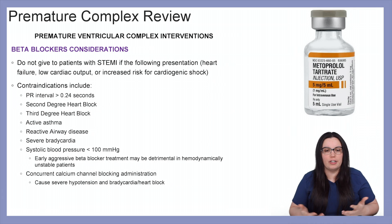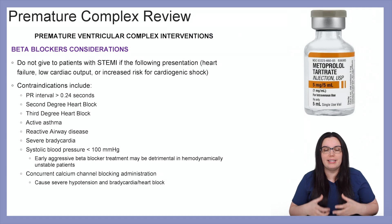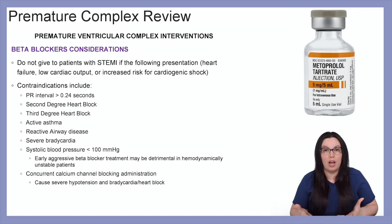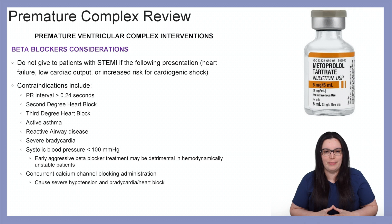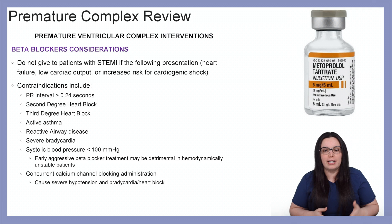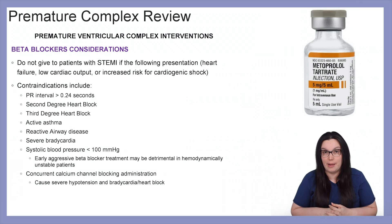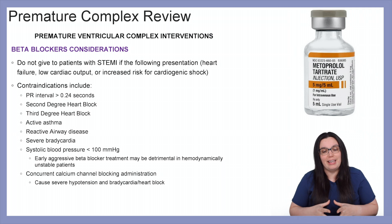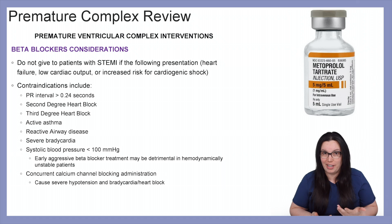We do not want to give beta blockers to patients with ST elevation myocardial infarctions if the following presentations are seen: heart failure, low cardiac output, or increased risk of cardiogenic shock. Additional contraindications include a PR interval greater than 0.24 seconds, 2nd degree heart block, 3rd degree complete heart block, active asthma, reactive airway disease, severe bradycardia, and a systolic blood pressure less than 100. Early aggressive beta blocker treatment can be detrimental in hemodynamically unstable patients, and concurrent calcium channel blocker administration can cause severe hypotension, bradycardia, and even heart blocks.